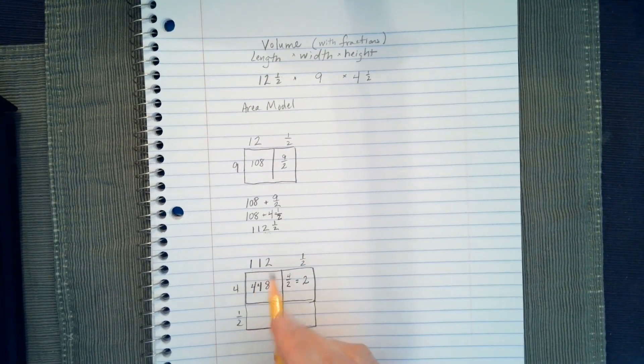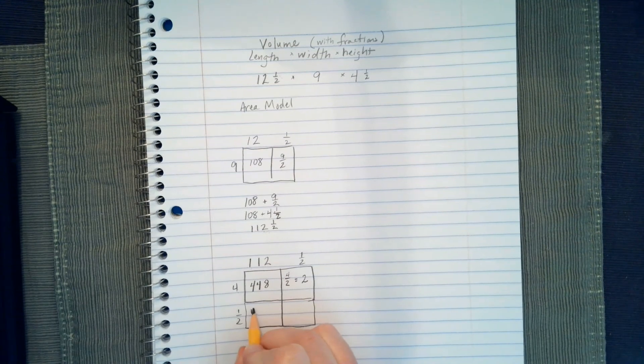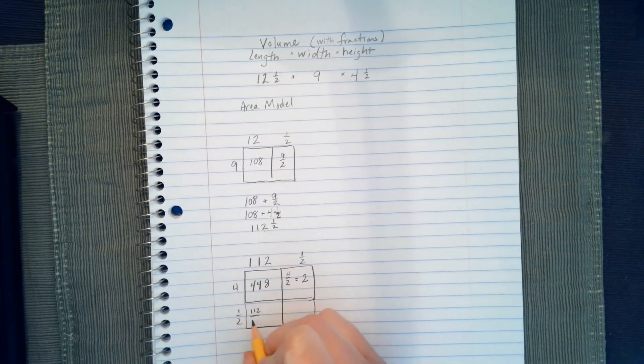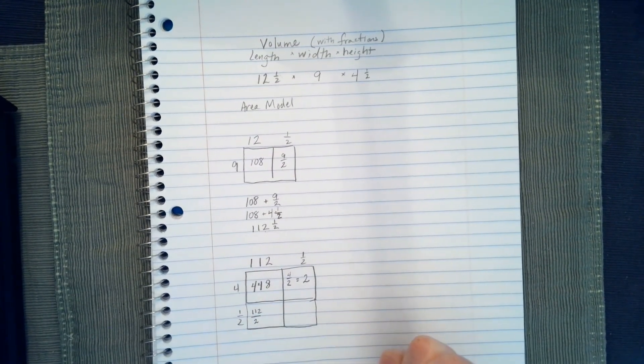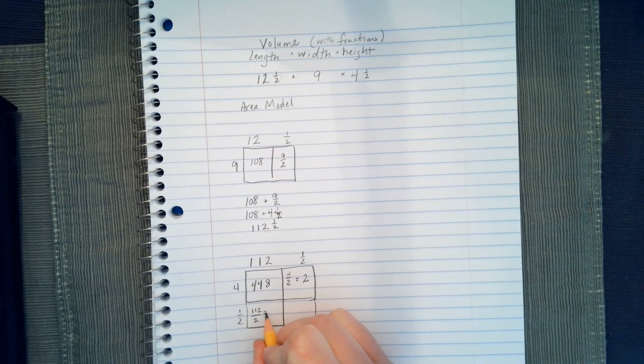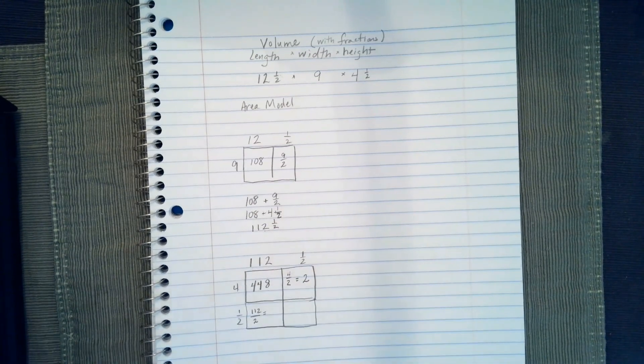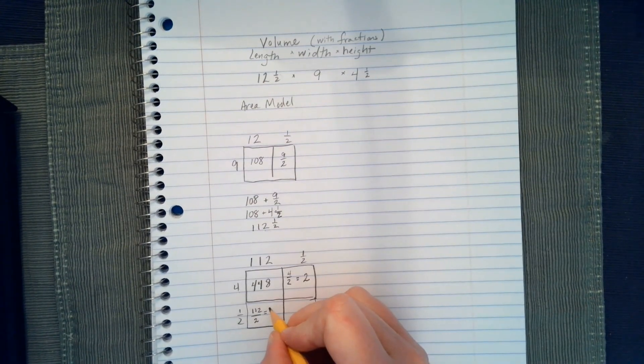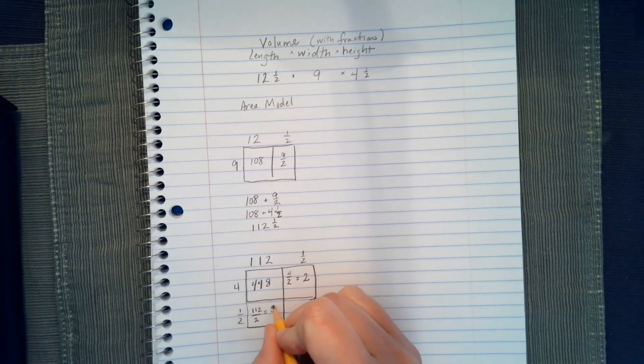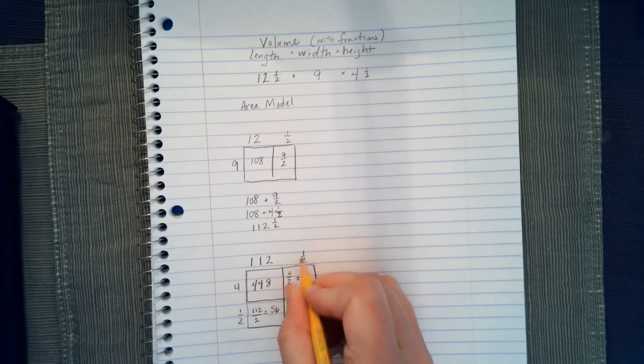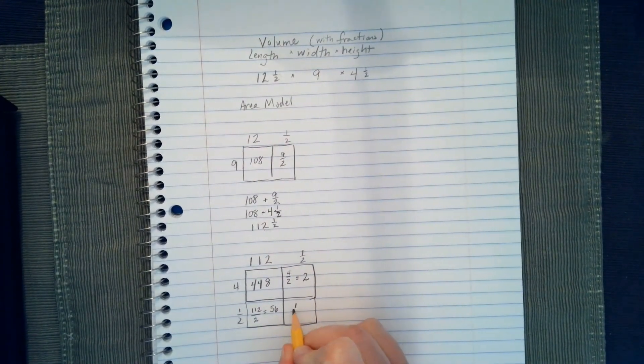We get 112 times 1 half, so that's 112 halves. And if we simplify this, which I highly recommend doing, we're going to end up with 56. 1 half times 1 half is equal to 1 fourth.